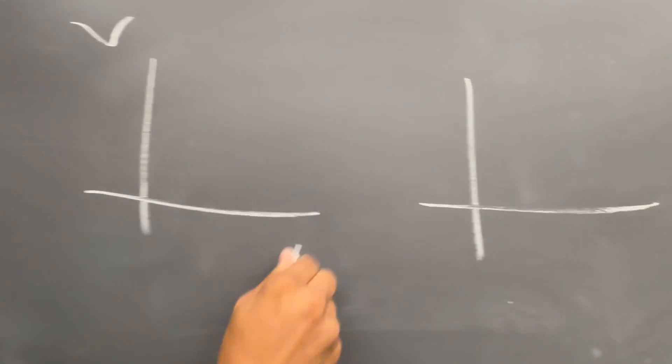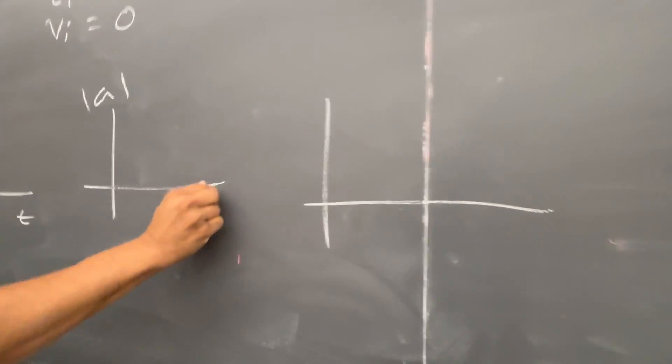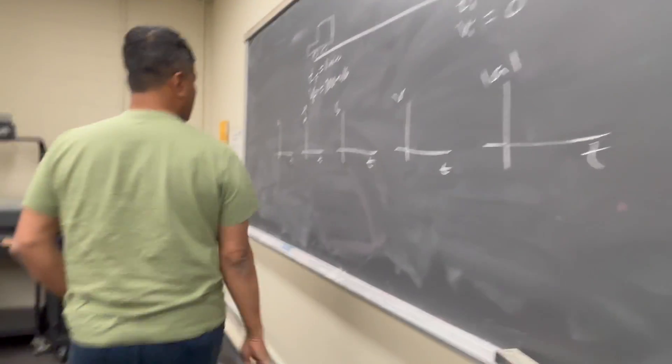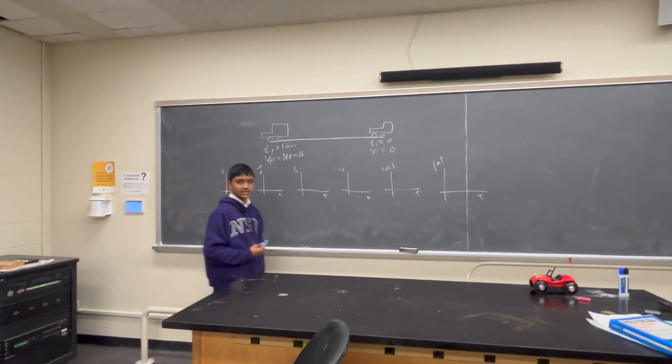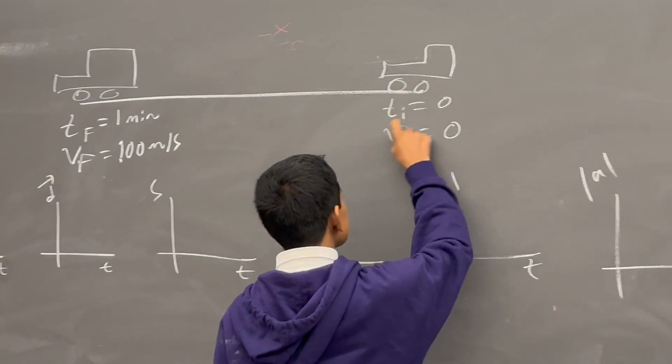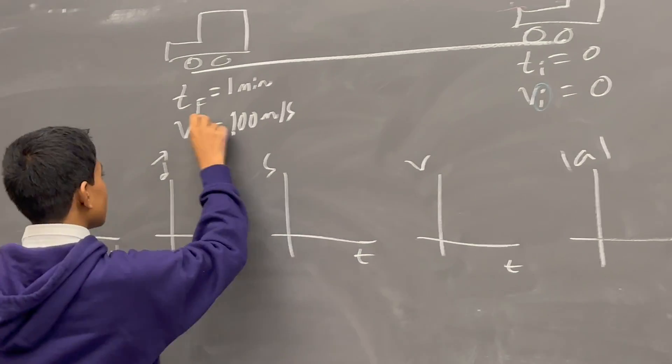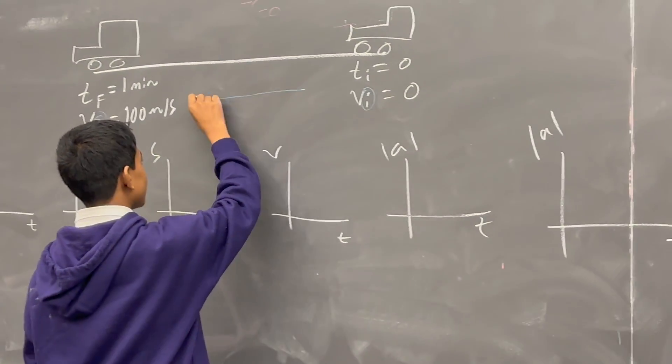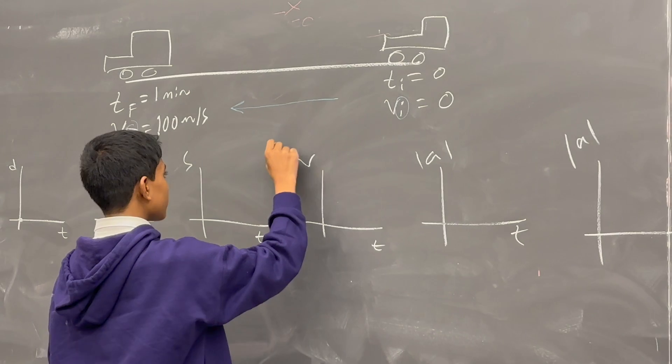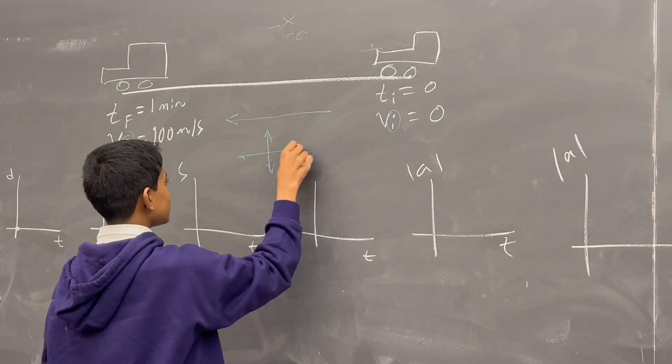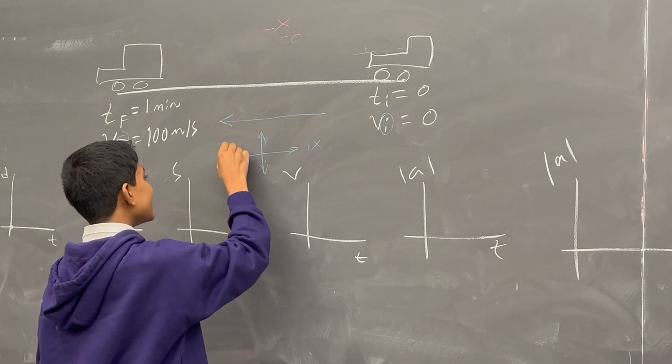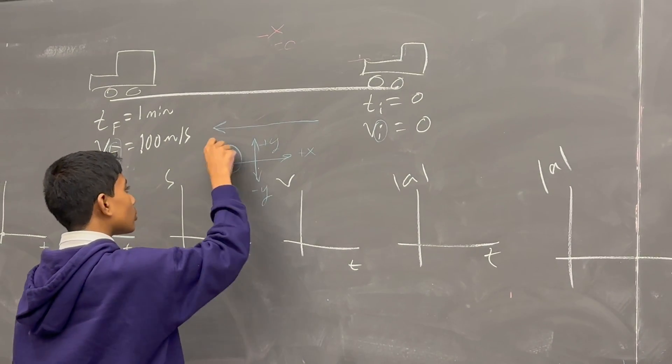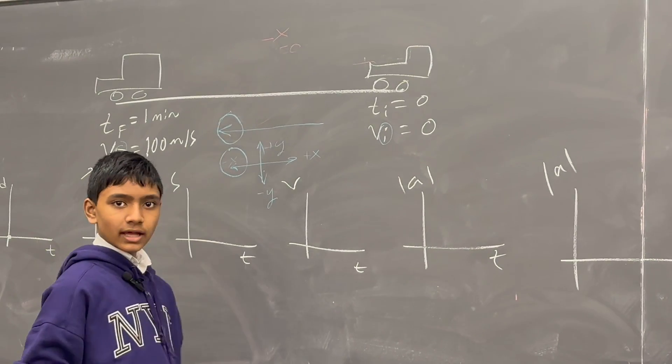Time, velocity versus time, acceleration versus time. Again, we need at least two points to draw this graph. The same strategy: initial is the beginning, final is the end. So we draw an arrow from the beginning to the end. And what direction does that correspond to? Let's draw our axes: plus x, minus x, plus y, minus y. It looks like it corresponds with minus x, so that's what we're going with.